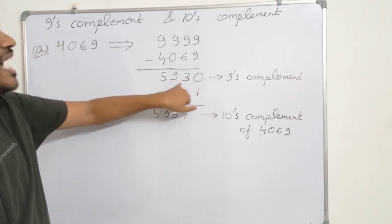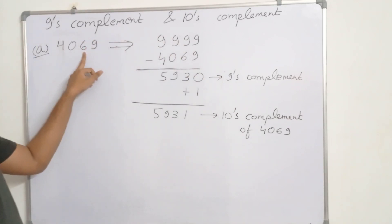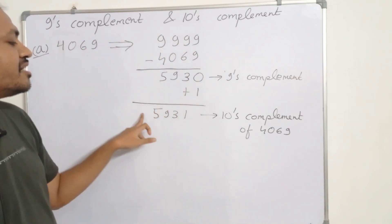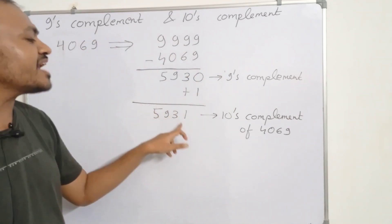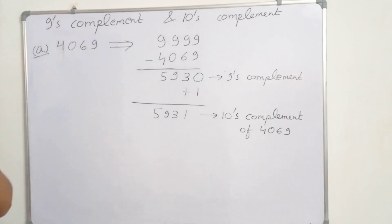5930 is the 9's complement of 4069, and if we add 1, we get 5931. This is the 10's complement of 4069.